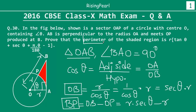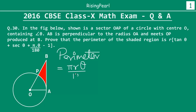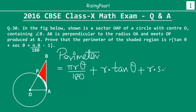Now we have all three sides of the shaded region: the arc AP = πRθ/180, AB = R·tan θ, and BP = R·sec θ − R. Let's add all of them to find the perimeter. Taking R as a common factor, the perimeter equals R × (πθ/180 + tan θ + sec θ − 1).